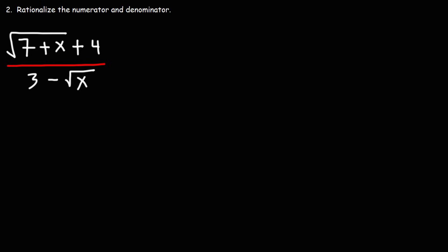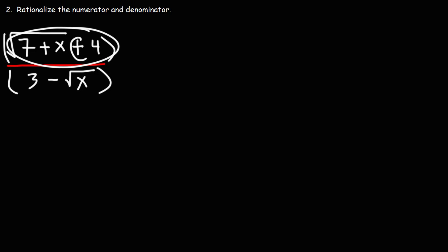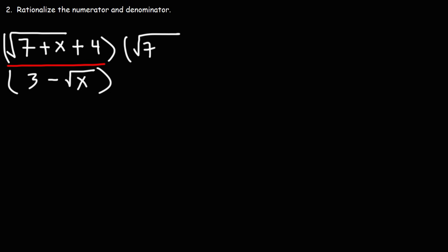Now here's a harder problem — go ahead and rationalize both the numerator and the denominator. Let's begin with the numerator. We're going to multiply the entire fraction by the conjugate of the numerator. The conjugate is everything we see here; we're just going to replace the positive sign with a negative sign. So it's going to be the square root of 7 plus x minus 4, and I'm going to rewrite that for the bottom part of the fraction as well.